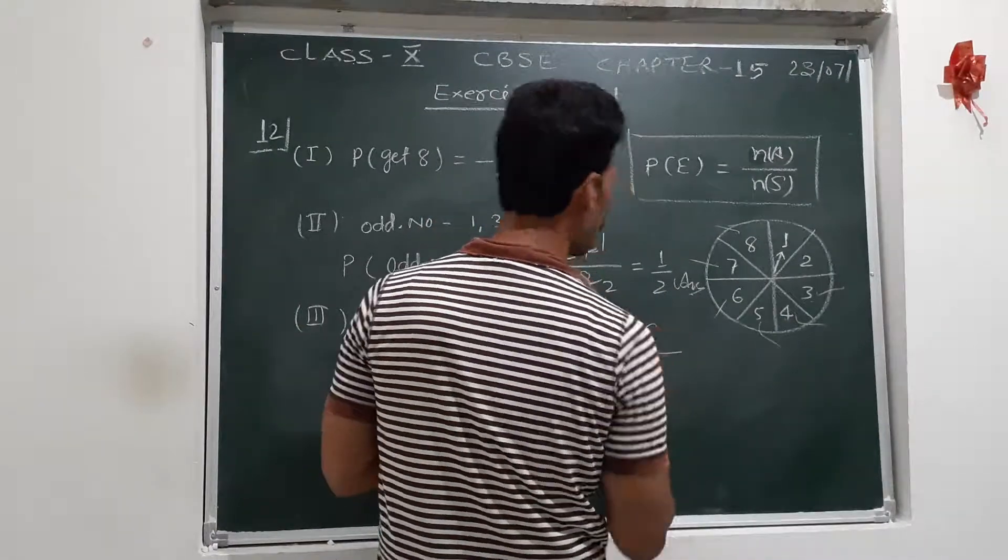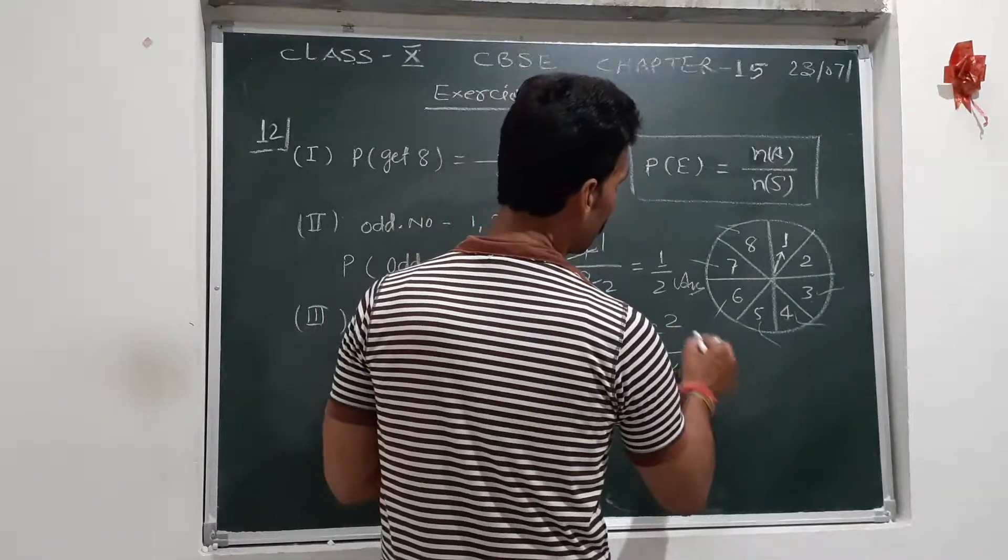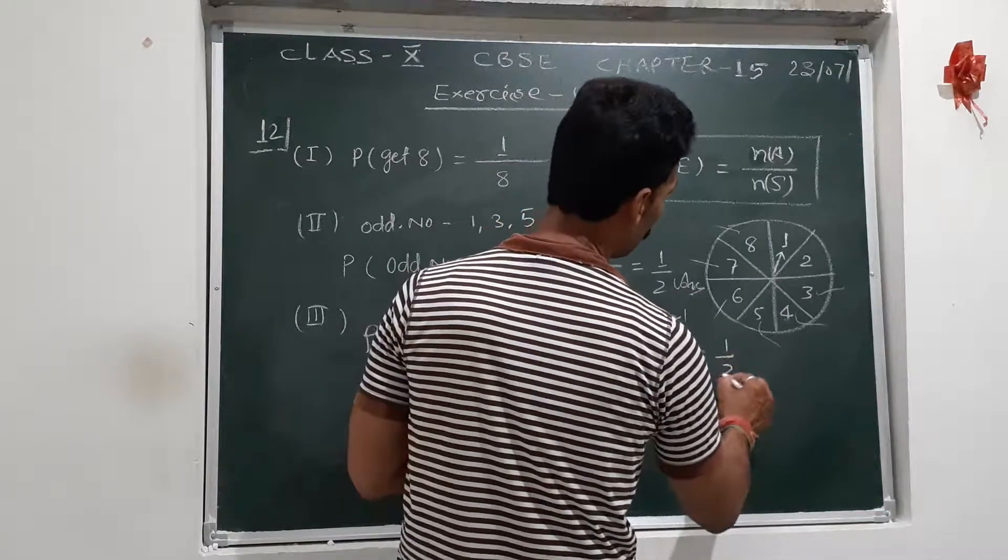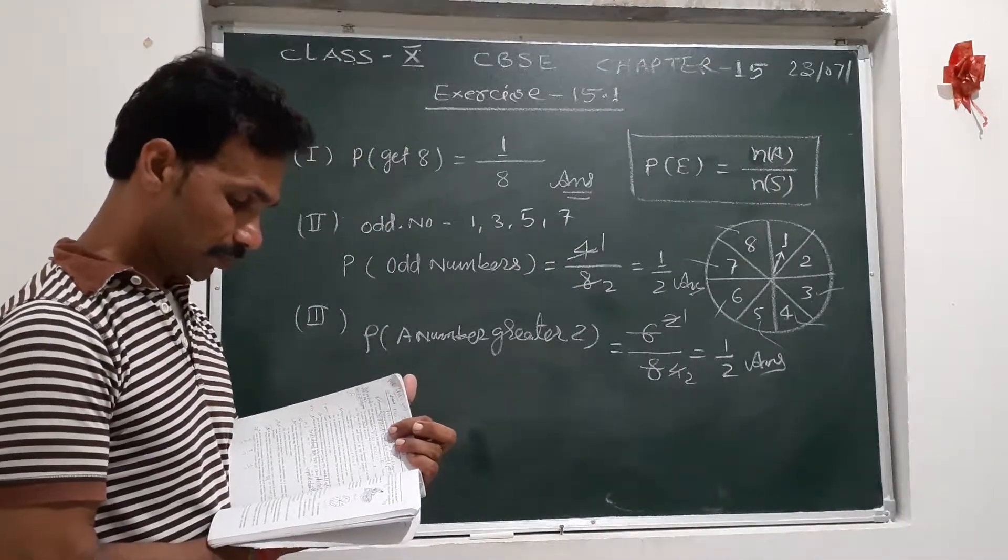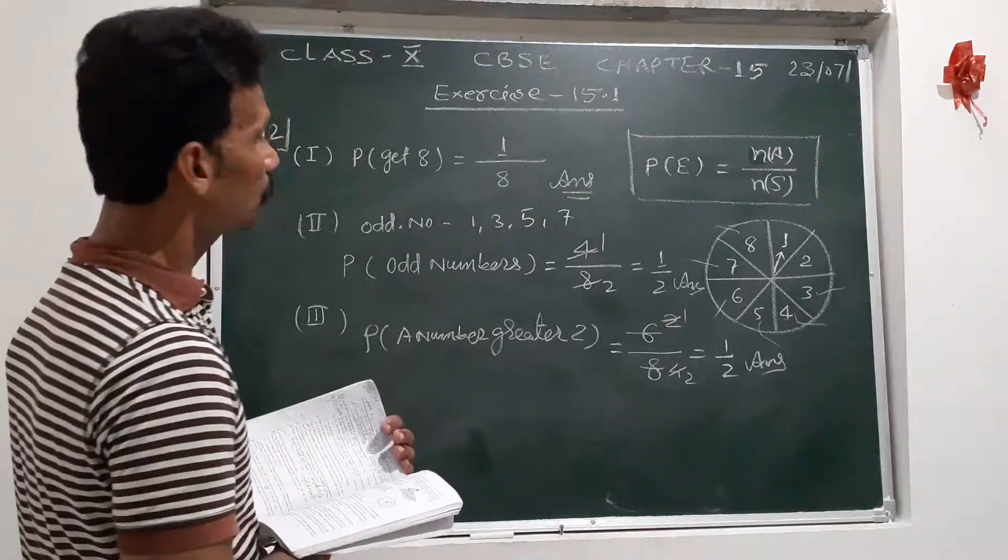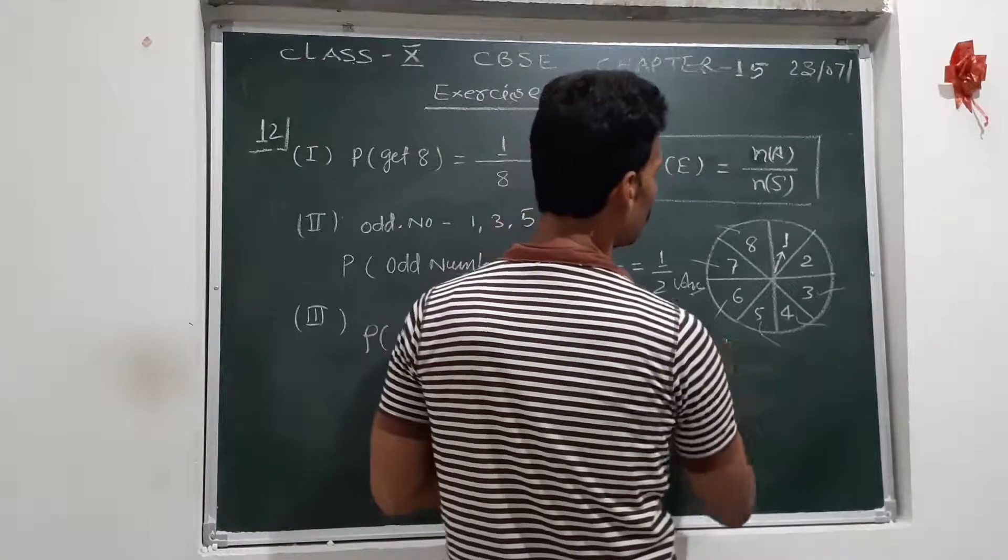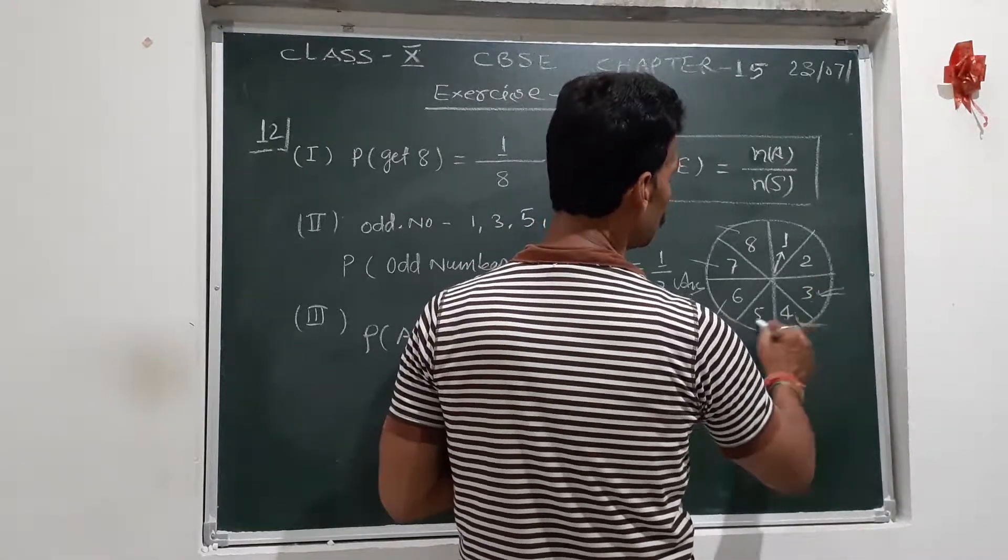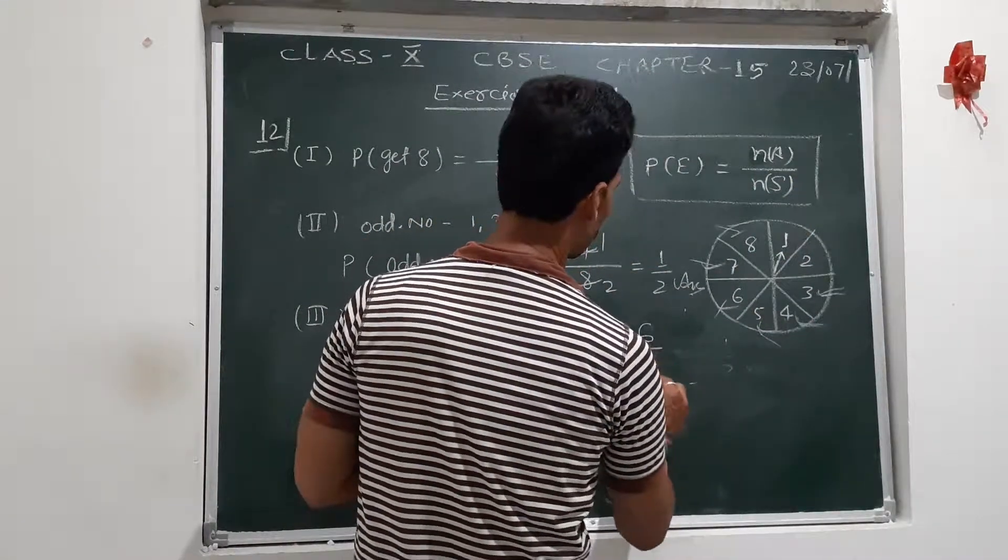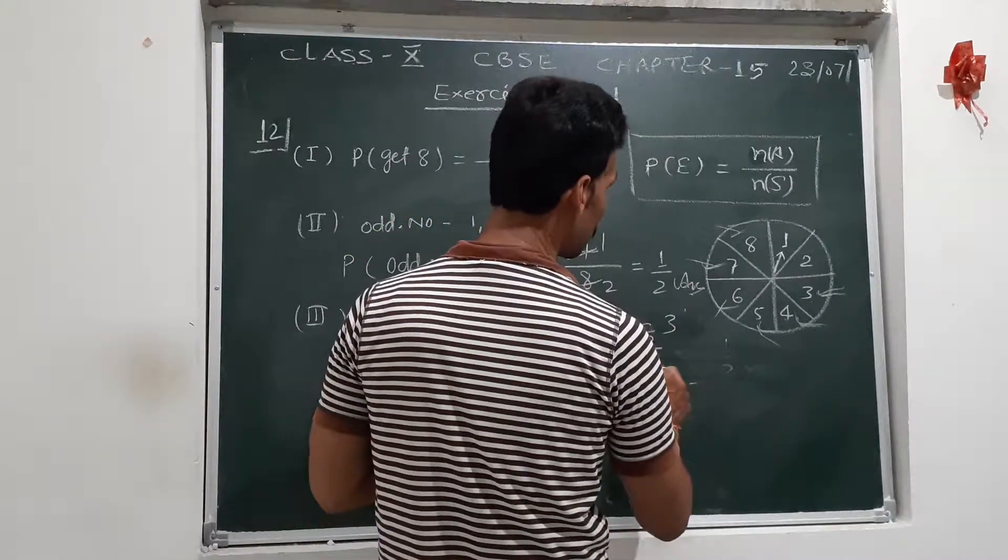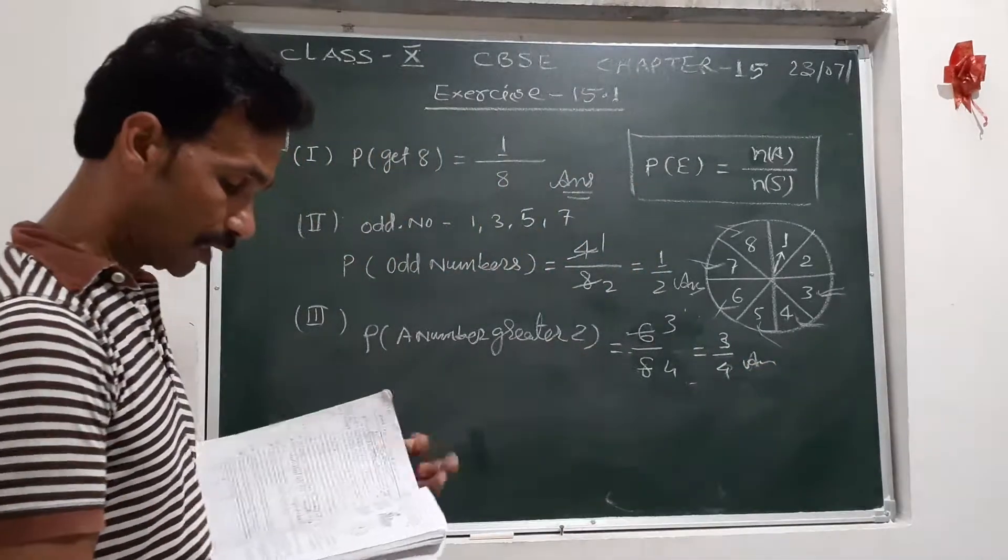And the total is 8. So 6 upon 8, which simplifies to 3 upon 4. Like this, right?